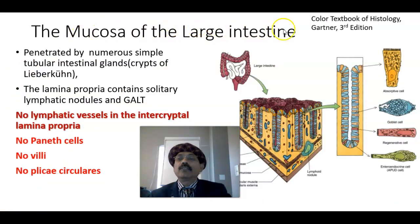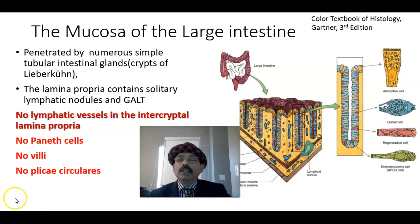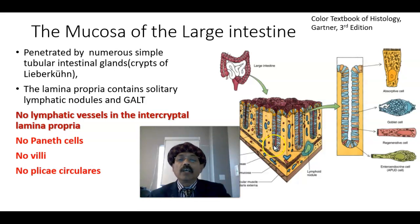The mucosa of the large intestine is penetrated by numerous simple tubular intestinal glands called Crypts of Lieberkühn. This is the intercryptal space — there is no lymphatic vessel there. The large intestine is different from the small intestine because there is no Paneth cell at the base of the Crypts of Lieberkühn. Paneth cells are only present in the cecum, but in most of the large intestine the Crypts of Lieberkühn have no Paneth cell. There are also no villi and no plicae circulares in the wall of the large intestine.